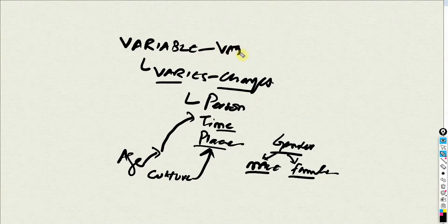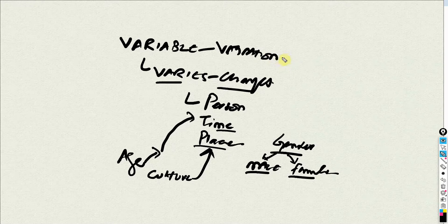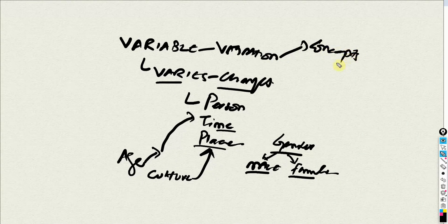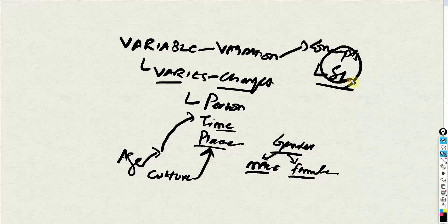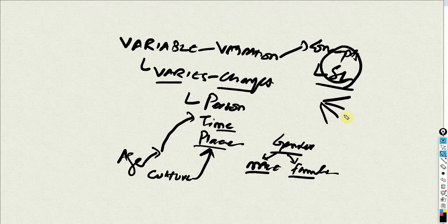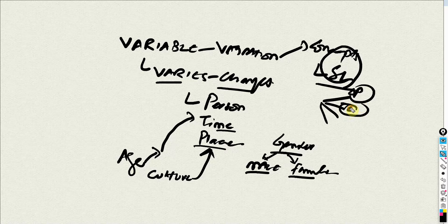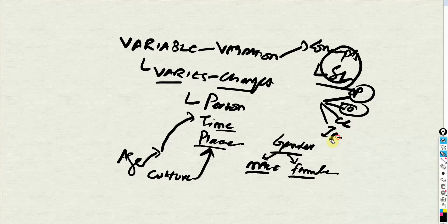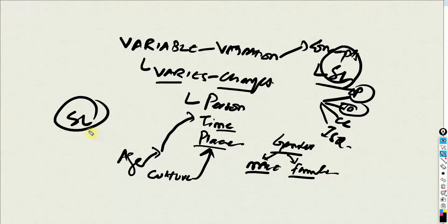What I am interested in is assessing the variation — variation in different concepts. For now, we are focusing on servant leadership. We are interested in finding out variation in servant leadership and how these variations affect other variables — for example, how it influences organizational performance, turnover, collaborative culture, or internal service quality. So servant leadership is your variable.